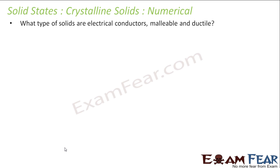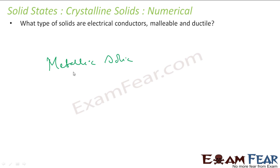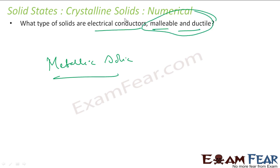What type of solids are electrical conductors, malleable, and ductile? Metallic solids are the only ones that are electrical conductors, malleable, and ductile — these properties are characteristic of metallic solids.